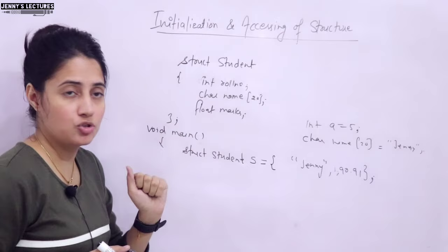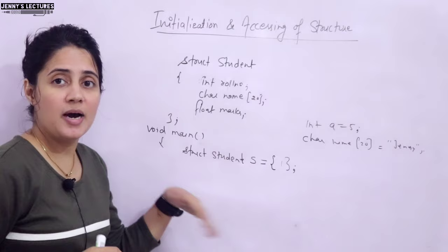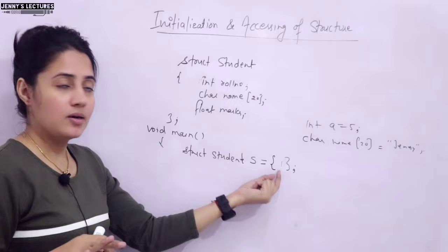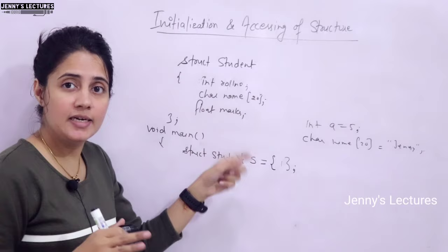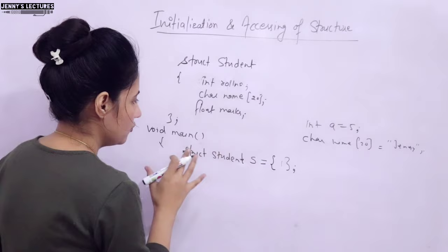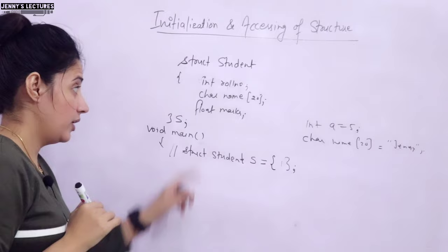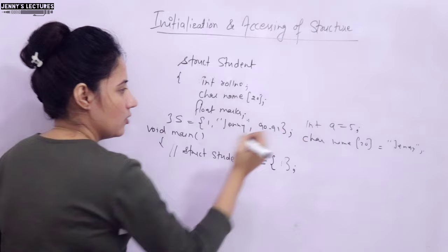The second rule is about partial initialization. If you only write one value, like '{1}', the first member (roll number) gets that value, and the remaining members are automatically initialized by the compiler — strings and characters to null, and integers and floats to zero. You can also omit the initialization at declaration time and write it separately: 's = {1, "Jenny", 90.91};' — that is also fine.